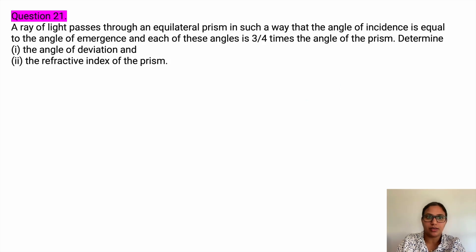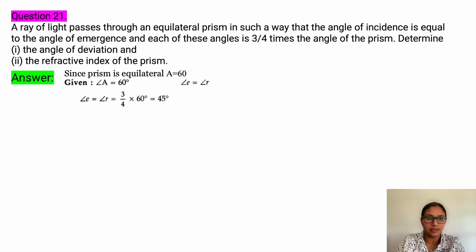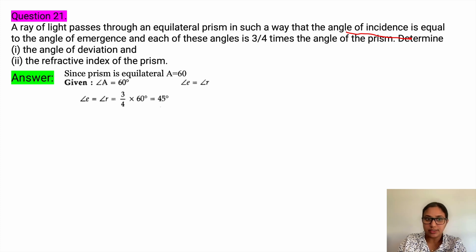A ray of light passes through an equilateral prism such that the angle of incidence is equal to the angle of emergence, and each of these angles is 3 by 4 times the angle of the prism. Determine the angle of deviation and the refractive index of the prism. Since it is an equilateral prism, angle A will be 60 degrees. The angle of incidence equals the angle of emergence, which is 3 by 4 times 60, equal to 45 degrees.